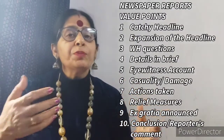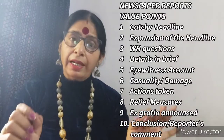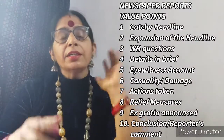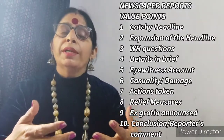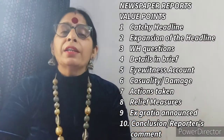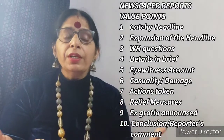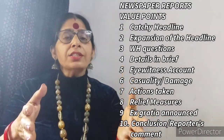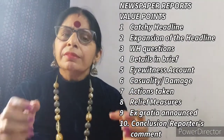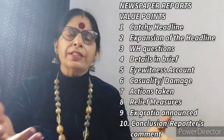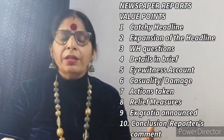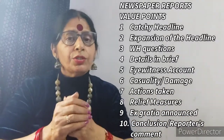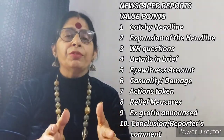The first value point is your catchy headline. The second value point is expansion of the headline — whatever you have written in the headline, you expand it further. The third point is WH questions: why it happened, where it happened, when it happened, how it happened. The fourth value point is details in brief — give the detail of the accident or event, but don't elaborate too much.